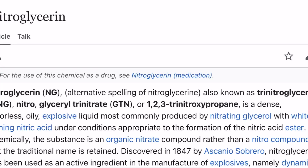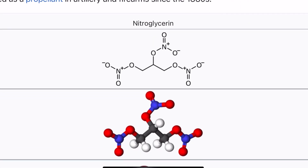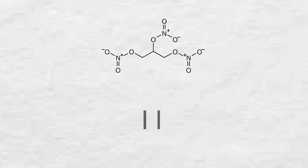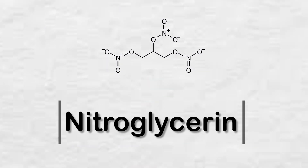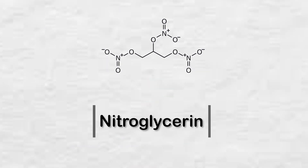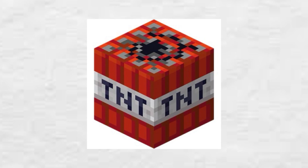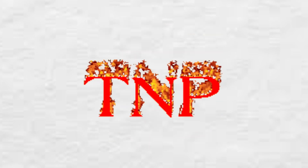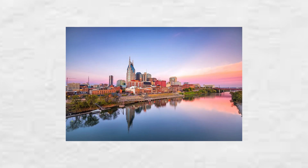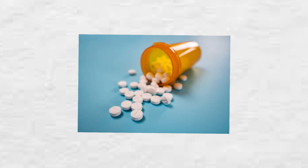Today I'm going to do something fun. Nitroglycerin, also known as trinitroglycerin, is an energetic oily liquid that has a very similar structure to TNT, TNP, and TNC. It has uses in dynamite and other explosive things due to its energetic properties, and it's also a heart medication.